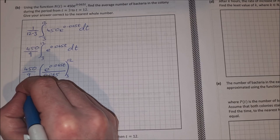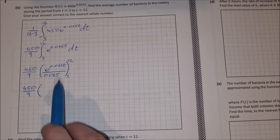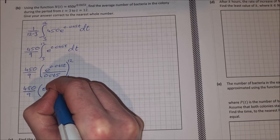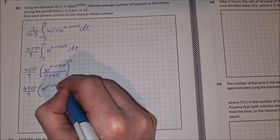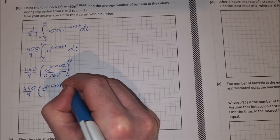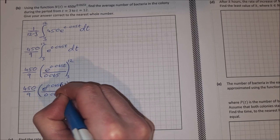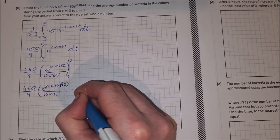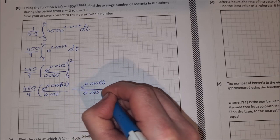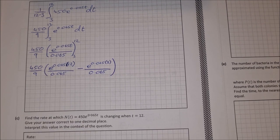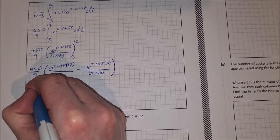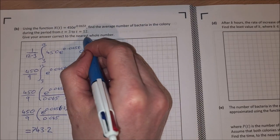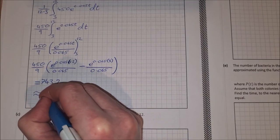So that's 450/9 multiplied by: subbing in 12 gives e^(0.065 × 12) / 0.065, minus subbing in 3 gives e^(0.065 × 3) / 0.065. Put that straight into your calculator and you should get 743.2, which is approximately equal to 743 to the nearest whole number.